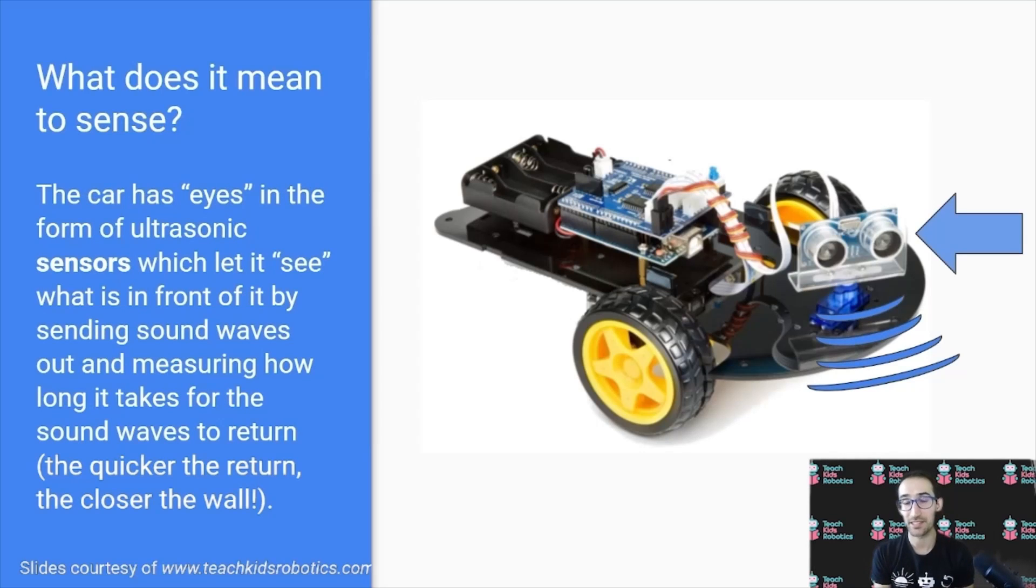The car has eyes in the form of ultrasonic sensors, which let it see what is in front of it by sending sound waves and measuring how long it takes for the sound waves to return. The quicker the return, the closer it is to the wall.